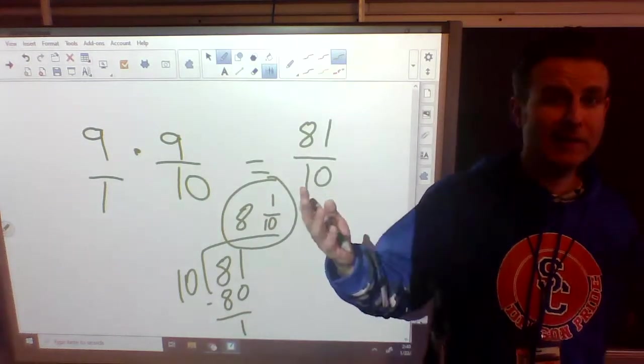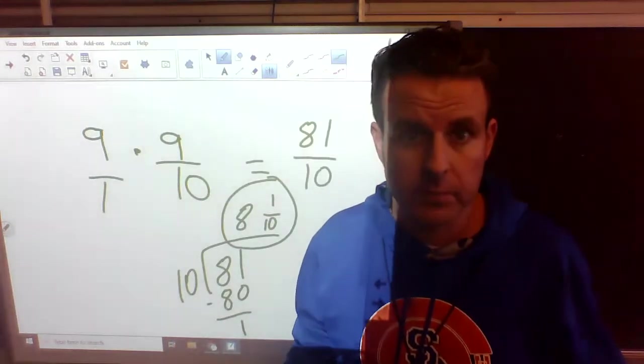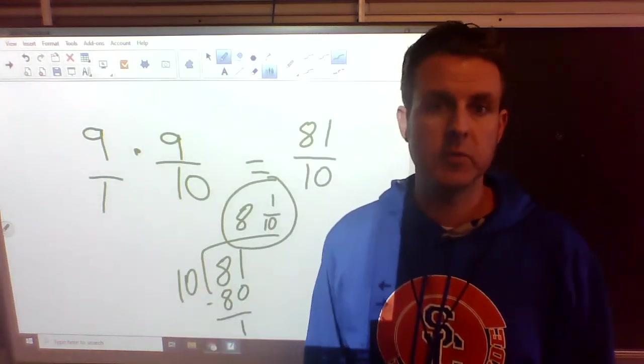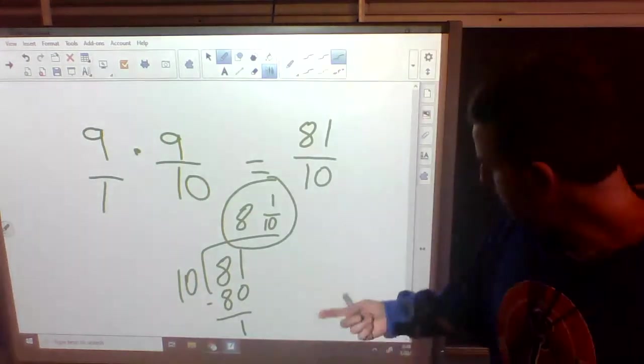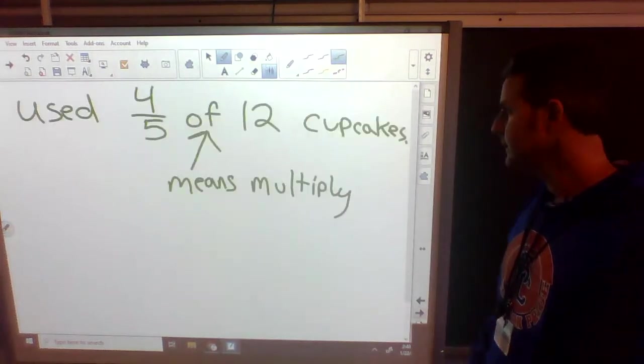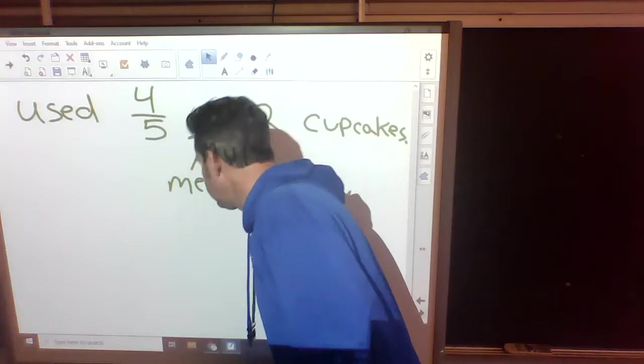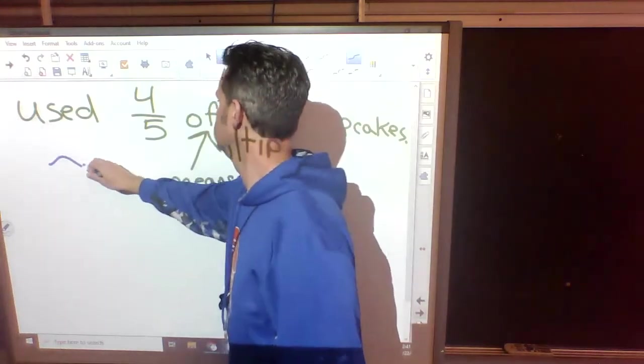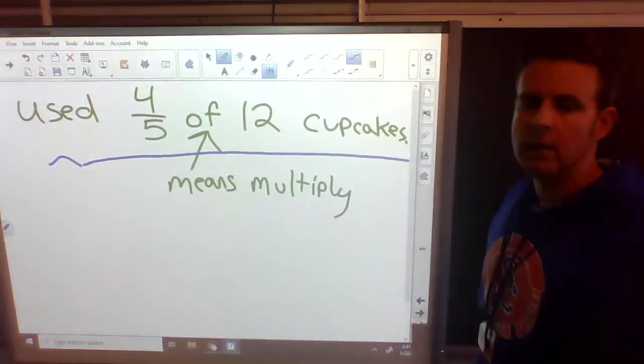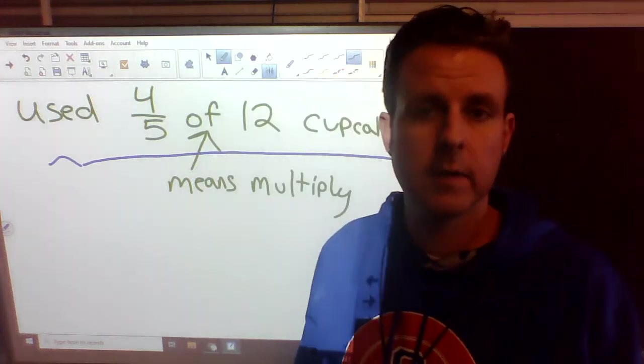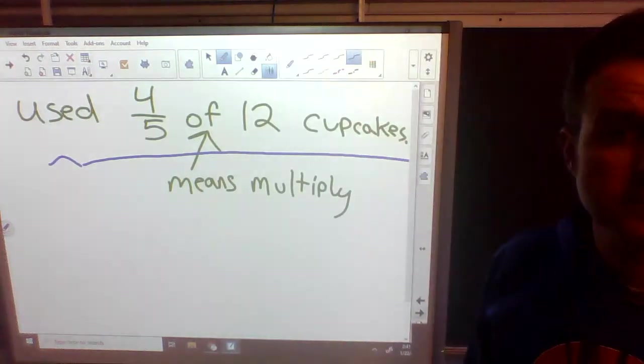Now here's the only really tricky part. Word problems. Oh, I know I said word problems. Y'all are freaking out. Let me show you one. We used. Here's the word problem. I drew a line here. We used 4 fifths of 12 cupcakes. How many did we use?